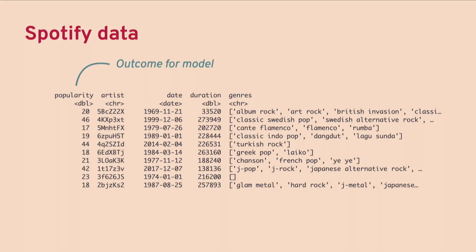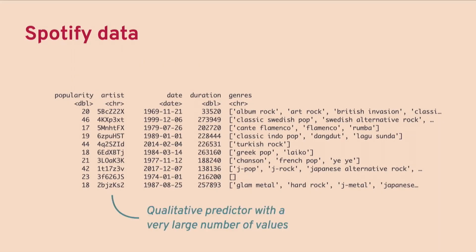The outcome is the popularity column — a numeric we want to predict using the other columns in the dataset. There's an artist feature, and as you might imagine there are quite a large number of artists in the Spotify catalog, so we might think about ways to deal with that when modeling.